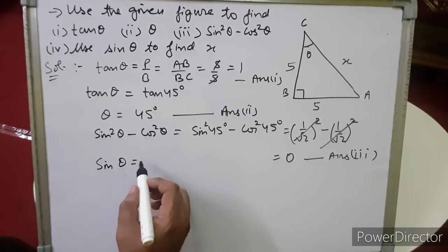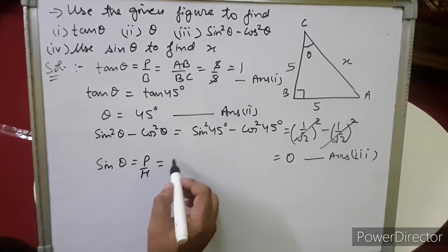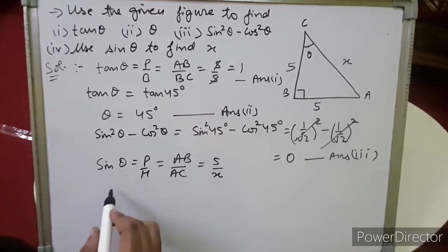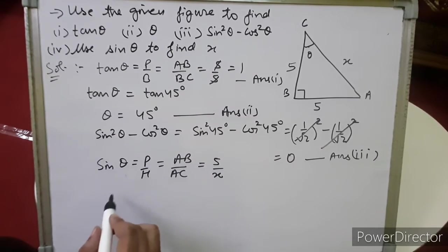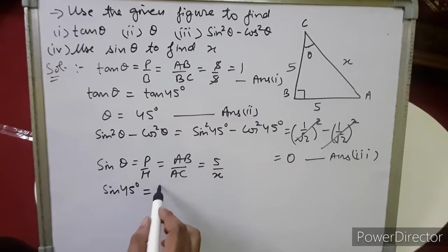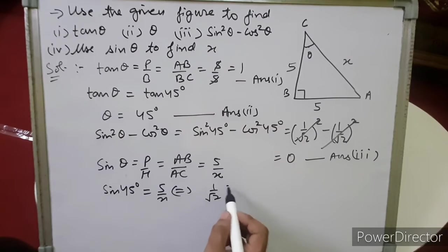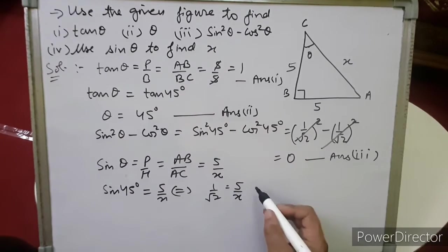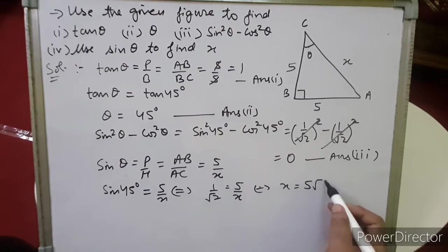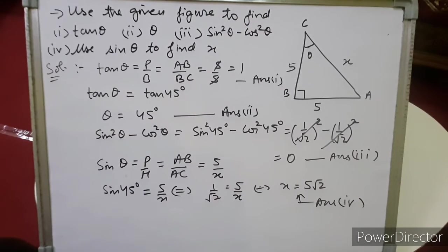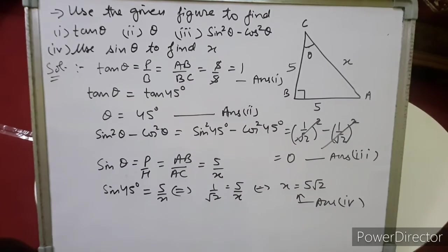For the fourth part, use sin θ to find x. Sin θ = perpendicular/hypotenuse = AB/AC = 5/x. Substituting θ = 45°: sin 45° = 5/x, so 1/√2 = 5/x. Cross multiplying, x = 5√2. So the fourth answer is x = 5√2.